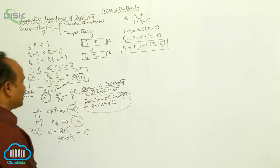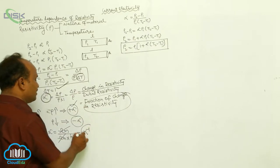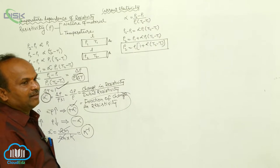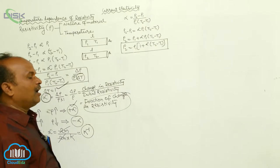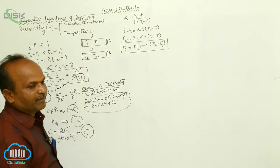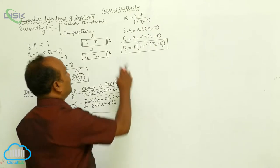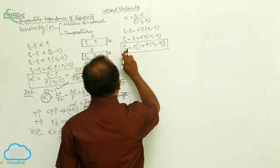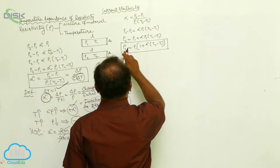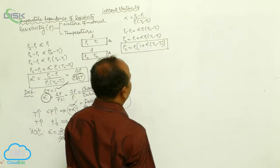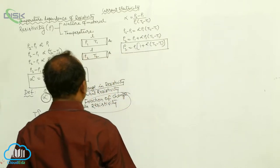The unit of temperature coefficient of resistivity is per Kelvin, or in the CGS system, per degree centigrade. Now, the formula is ρ₂ = ρ₁ × (1 + α(T₂ - T₁)).